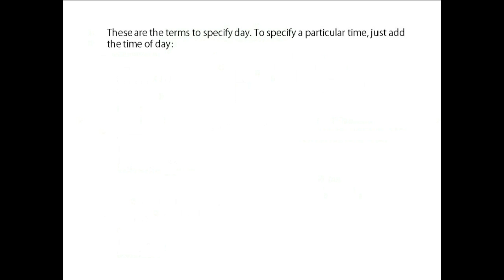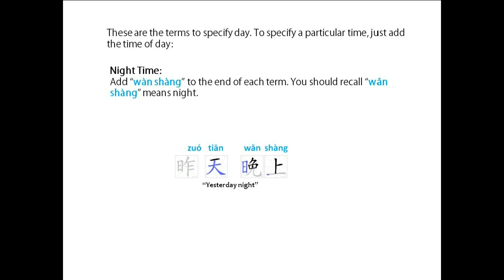These are the terms to specify a day. To specify a particular time of day, just add the time of day. For example, nighttime: add 晚上 (wǎn shàng) to the end of each term. You should recall 晚上 means night. 昨天晚上 (yesterday night). 明天晚上 (tomorrow night).